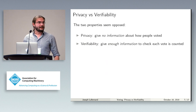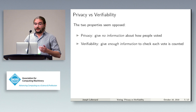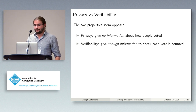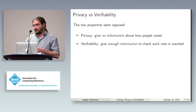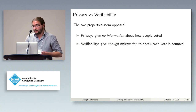Privacy and verifiability seem opposed at first, because intuitively privacy is the fact that you want to publish no information, or as little information as possible, about the way people voted. But for verifiability, you need to publish at least some information to allow people to check that their votes have been counted. In an extreme case, if you really want to be private, you might encrypt all the votes and send them directly to the tallying authority with no public bulletin board, and only publish the results. But if you do that, it's not verifiable, because the tallying authority can publish any result it likes.